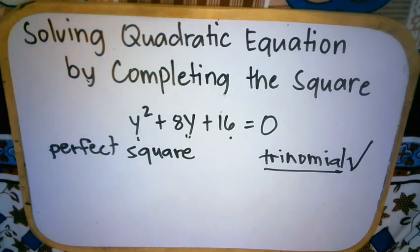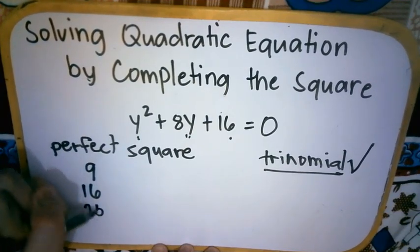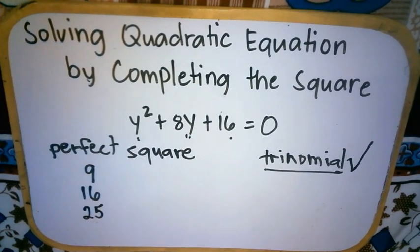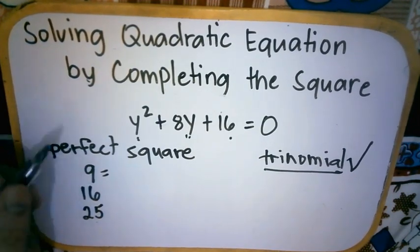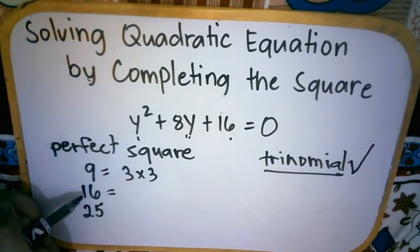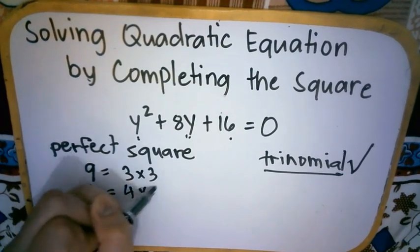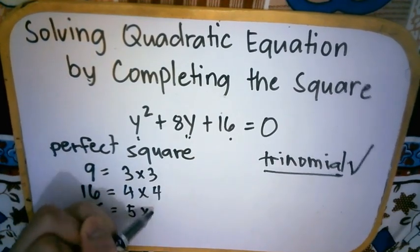Ano naman pag sinabing perfect square? Yung perfect square, mas madalas natin niyang na-encounter in terms of numbers. So, magbibigay ako ng examples ng mga perfect square numbers. Like 9, 16, and 25. Bakit ba sila tinawag na perfect square? Kasi kapag tinactor natin yung 9, we can have 3 times 3. Ang factor ng 16 is 4 times 4. Ang factor ng 25 is 5 times 5.